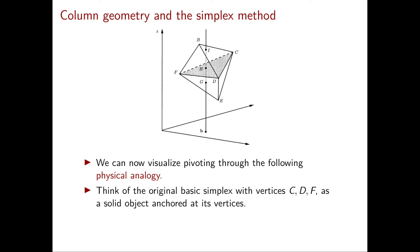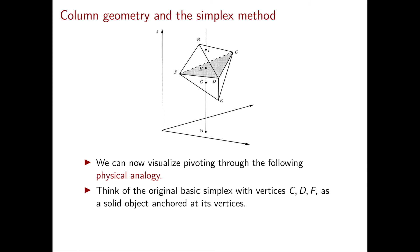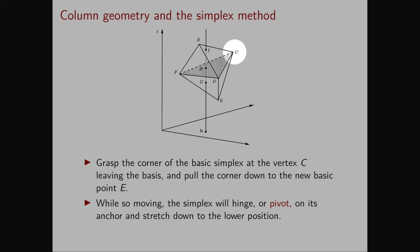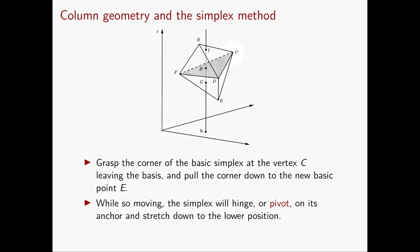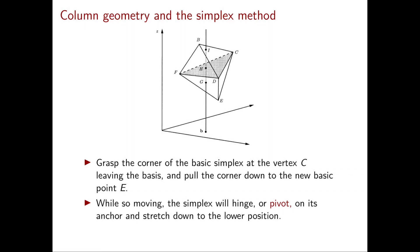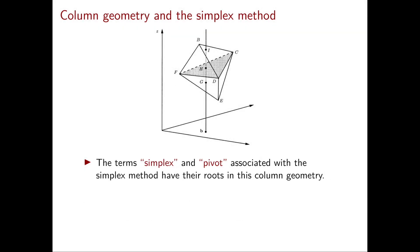Now we can visualize pivoting with a physical analogy. Think of the original basic simplex with vertices c, d, f as a solid object anchored at its vertices. We want to remove c from the basis and have e enter instead. We can imagine grasping corner c and pulling it down until we reach e, so from the old simplex we obtain the new one. While doing this, the basic simplex will pivot on the edge f,d as if anchored there — and this is where the word 'pivot' used in the simplex method comes from. We've also understood where the word 'simplex' comes from, since this entire geometric visualization is based on simplices.